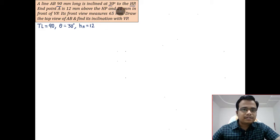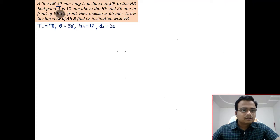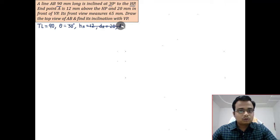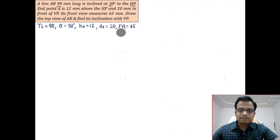And 20 mm in front of VP, so da is equal to 20. What is the front view? It measures 65 mm. So the front view length, let me just write FVL, and that is equal to 65 millimeters. Guys, remember front view length is nothing but a dash b dash.